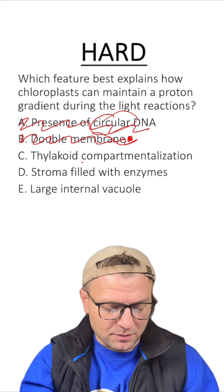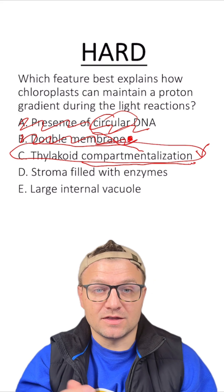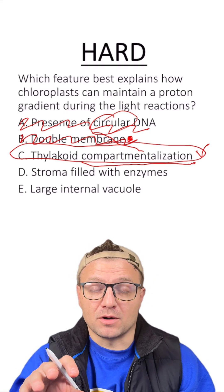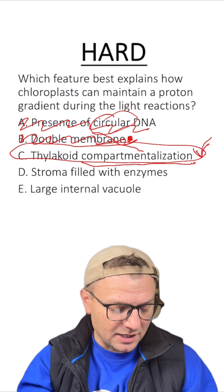C, thylakoid compartmentalization. That sounds like the better answer here. Thylakoid compartmentalization is when the thylakoids are a lot smaller. They're compartmentalized. They allow us to create a high concentration very easily. I think that's the right answer.